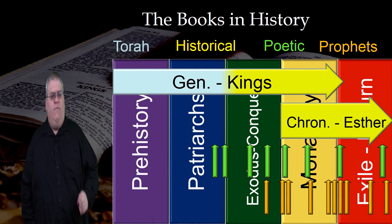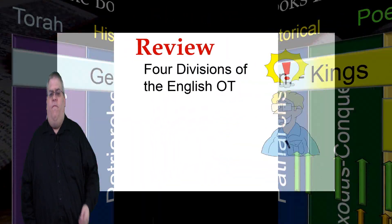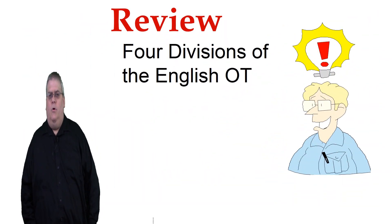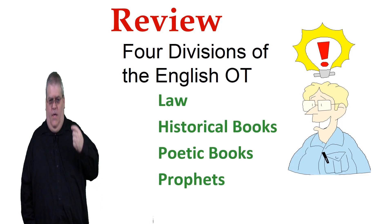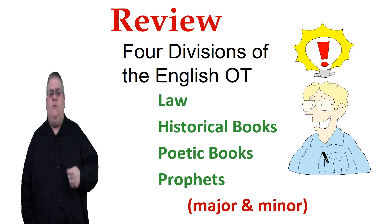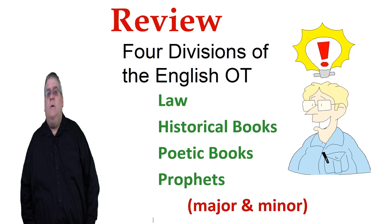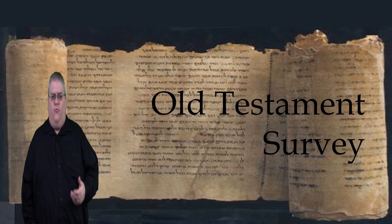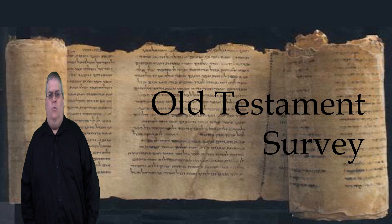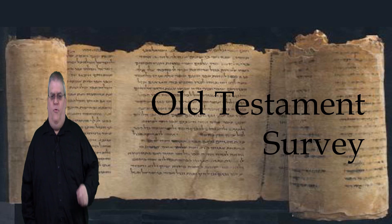We'll look at the historical placement of each book in more detail when we study that particular book. But for now, let's review the four divisions of the English Old Testament books: the law, the historical books, the poetic books, and the prophets. Remember, the prophets are divided into major prophets and minor prophets depending on the length of each book. Hopefully this provides an organizing framework to understand the literature and grouping of the Old Testament. In the next section, we'll look more closely at the common characteristics of the first group — the five books of Moses. Thanks for watching.